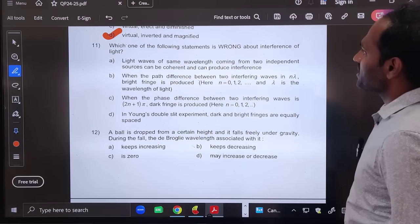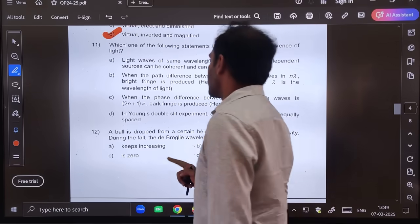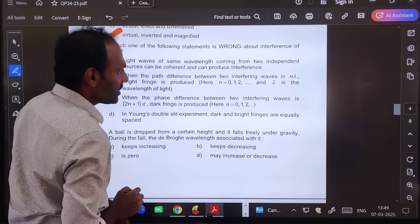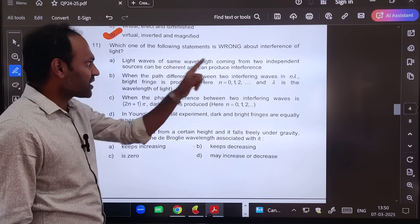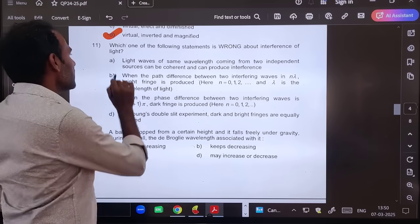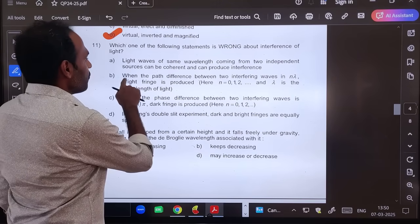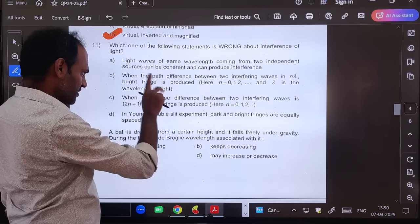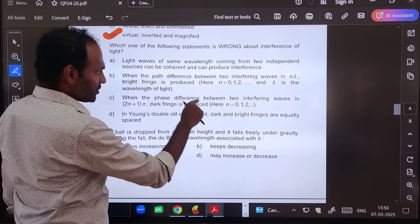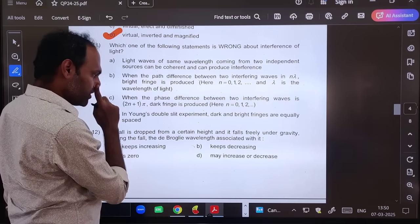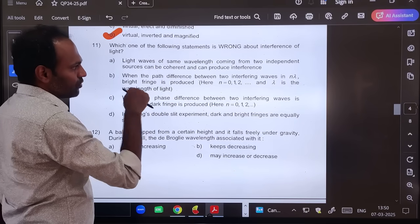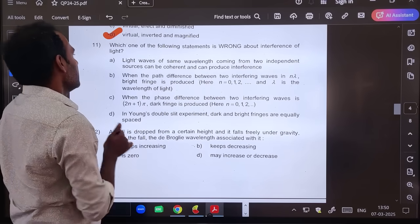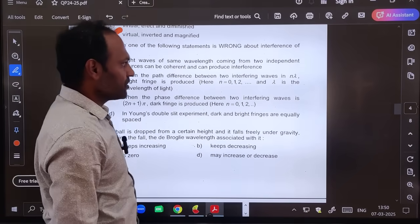Eleventh question: Which one of the following statements is wrong about interference? Wrong statement. Light waves of same wavelength coming from two independent sources can be coherent and can produce interference. No, the light sources are coherent, not independent. They are formed from the single source. So this statement is wrong. When the path difference between the two interfering waves is nλ, bright fringes produced. When the phase difference between two interfering waves is (2n+1)π, dark fringes produced. Yes. In Young's double slit experiment, dark and bright fringes are equally spaced. Yes. And the wrong statement is option A.